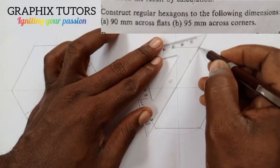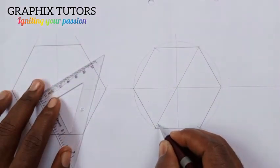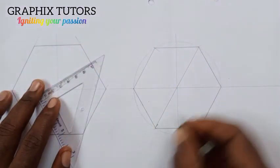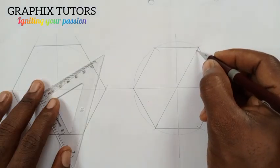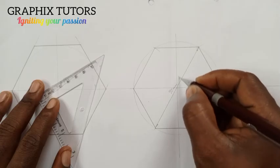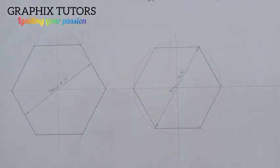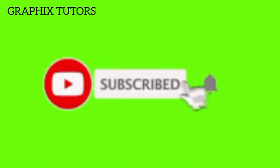You can see from here down to this point — from this corner to this corner is 95 millimeters across corner. This is the difference between hexagon across flats and hexagon across corner. If you found this video helpful, please don't forget to click on the subscribe button. Thanks for watching.